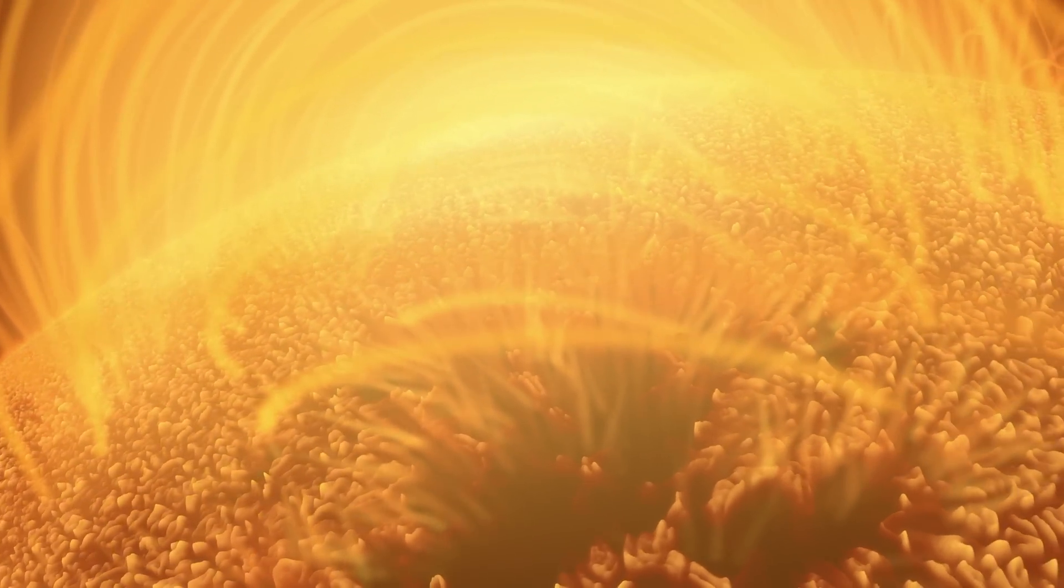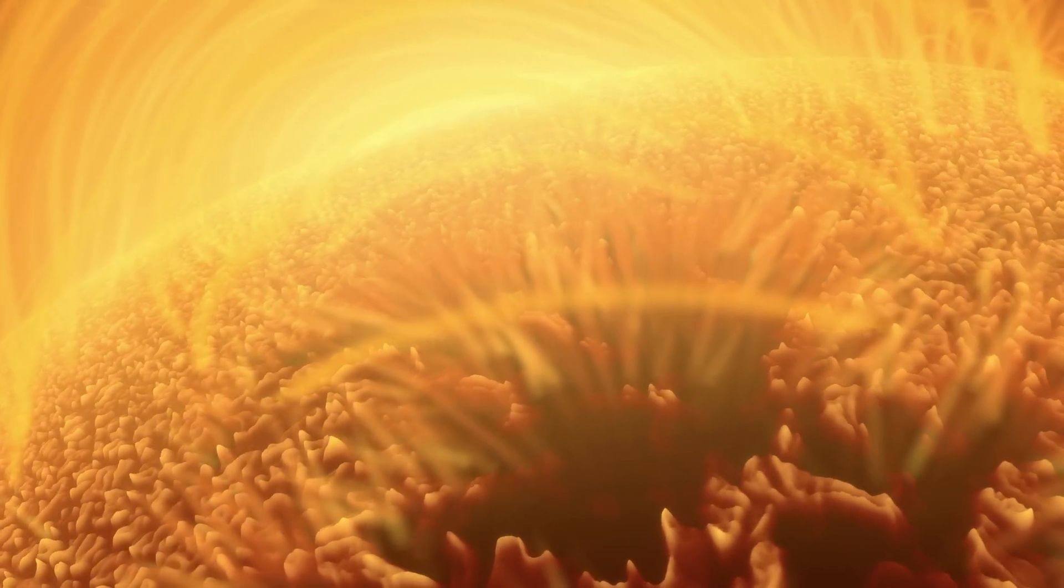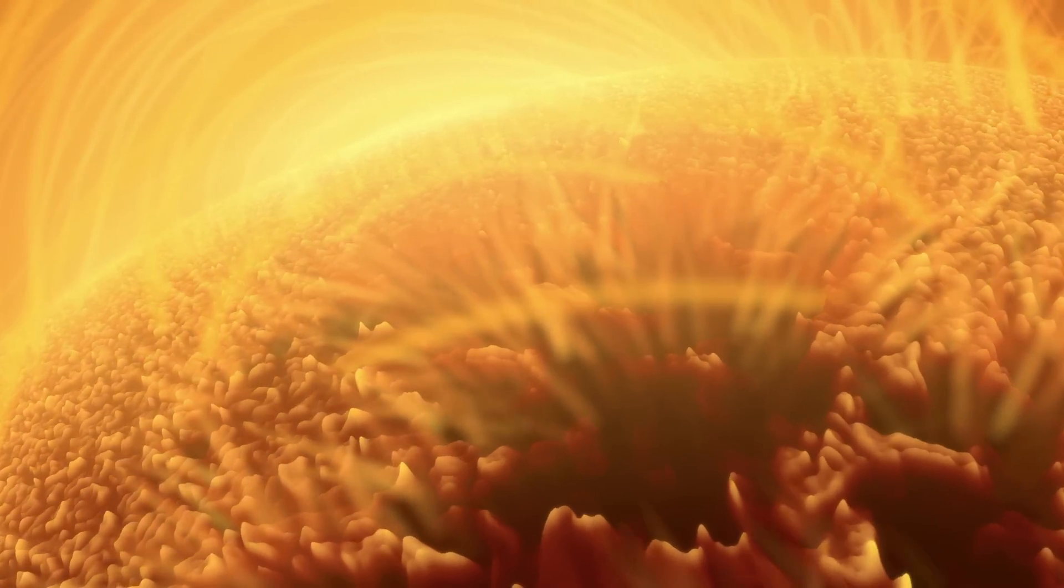In this animation, our goal was to see how magnetic field comes up through the surface of the sun and what effect it has. We start by looking down on the surface of the sun, and we see a pattern of bright and dark regions.